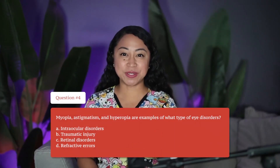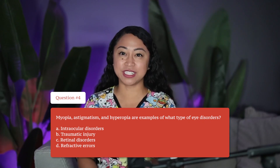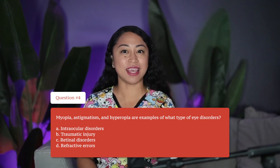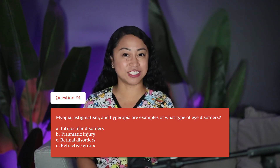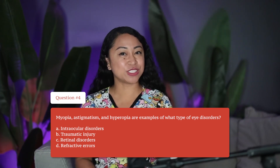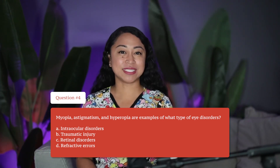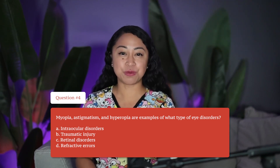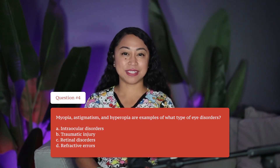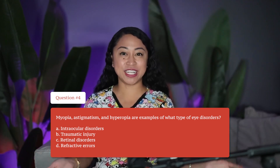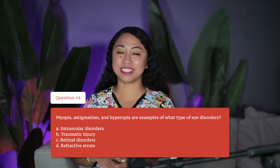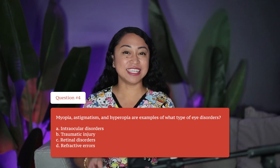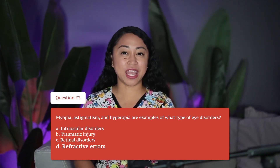Question 4. Myopia, astigmatism, and hyperopia are examples of what type of eye disorder? A. Intraocular disorders. B. Traumatic injury. C. Retinal disorder. Or D. Refractive errors. The correct answer is D, refractive errors.